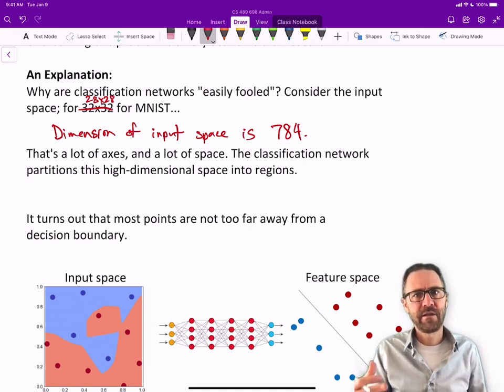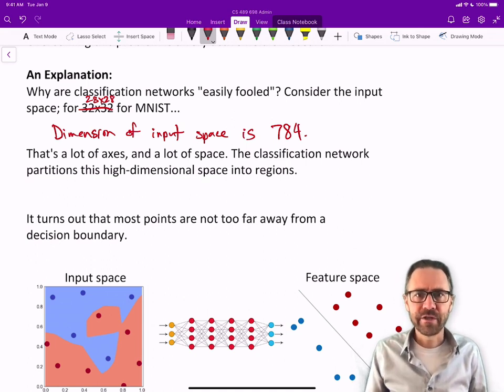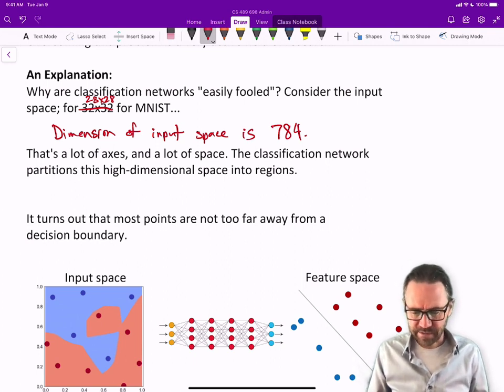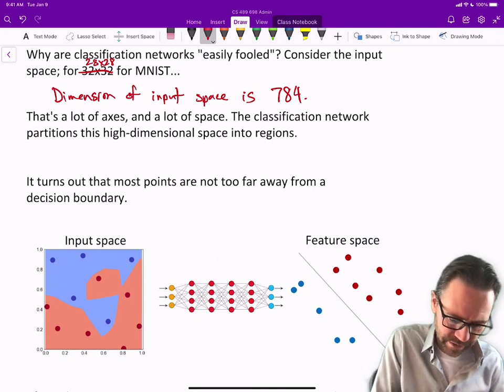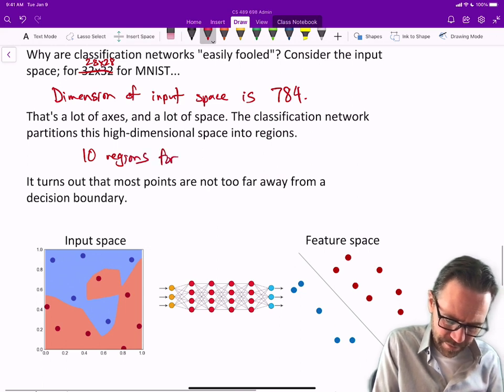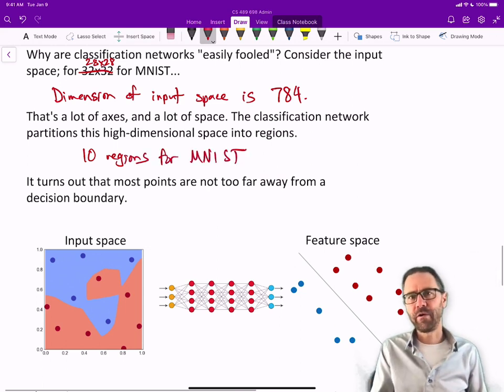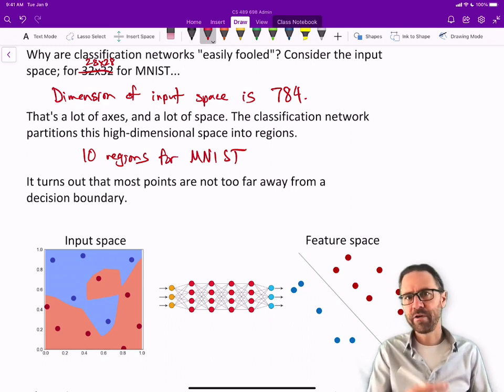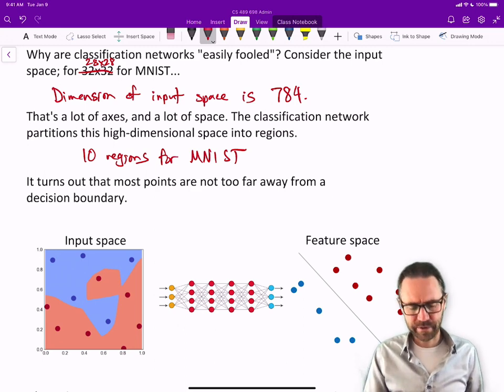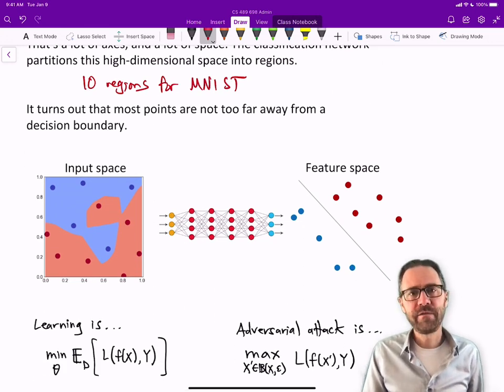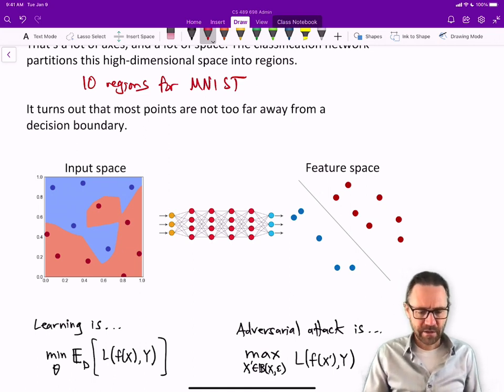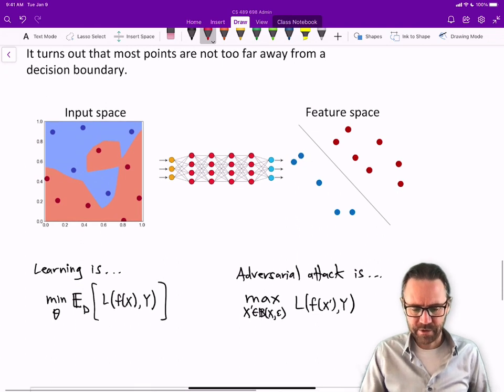That space is partitioned for MNIST into 10 different regions. The classification network partitions this high-dimensional space into regions. 10 regions for MNIST. You can imagine for ImageNet or CIFAR it's 100 or 1,000 different partitions. It turns out that most points are not too far away from a decision boundary.